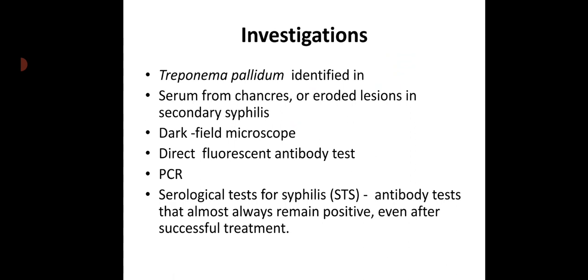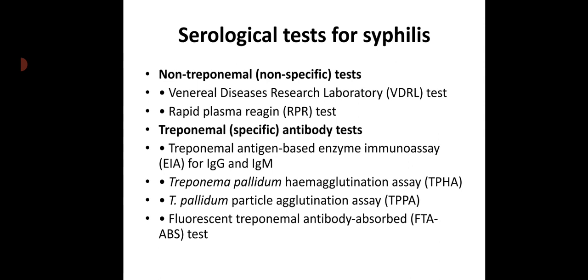Investigations in syphilis: Treponema pallidum is identified in serum from chancres or eroded lesions in secondary syphilis. We can identify it by dark-field microscopy, direct fluorescent antibody tests, PCR, and serological tests for syphilis. Serological tests for syphilis are antibody tests that almost always remain positive even after successful treatment. There are non-treponemal or non-specific tests and treponemal or specific antibody tests.